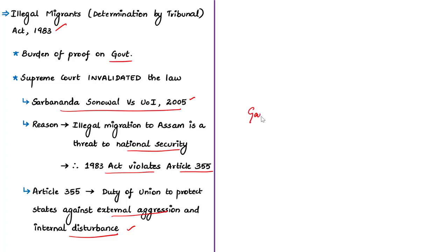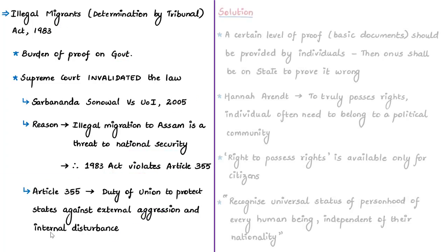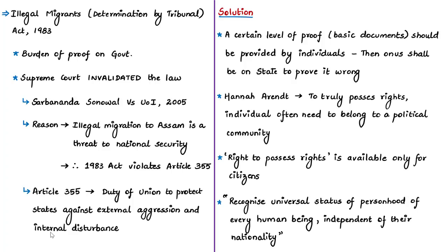Based on this judgment, the Gauhati High Court has ruled on various petitions confirming that the majority of petitioners are foreigners — the statistics are visible in the first part of this editorial. Now, what the author suggests is that a certain level of proof should be sufficient to discharge the burden. For example, if a person accused of being a foreigner submits a basic set of documents like voter ID and ration card, then the onus should be on the state — the government — to prove it wrong.